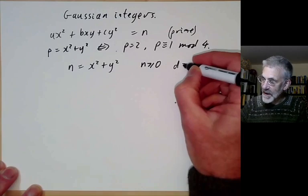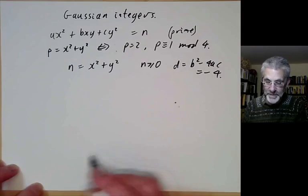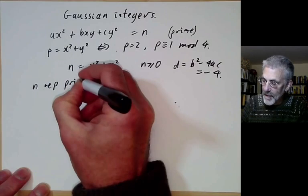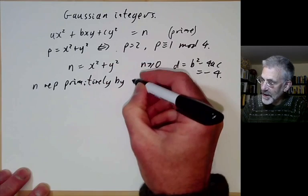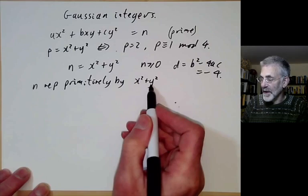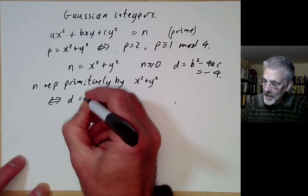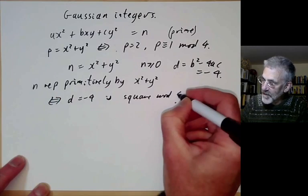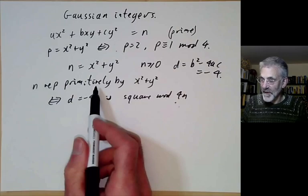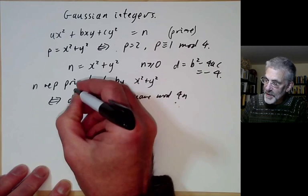This form has discriminant d = b²−4ac = −4. We know that n is represented primitively by some form of discriminant −4, and all forms of discriminant −4 are equivalent to x²+y². So n is represented primitively by x²+y² if and only if d = −4 is a square modulo 4n. Primitive means x and y must be coprime.